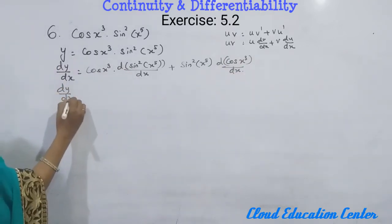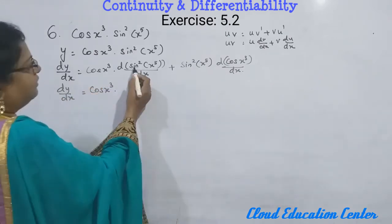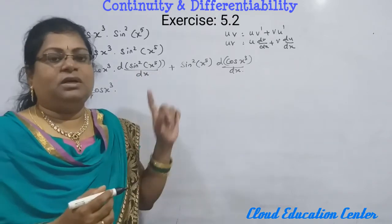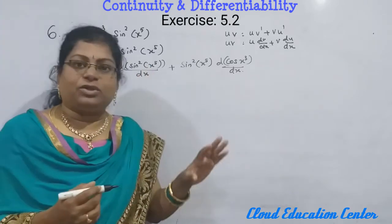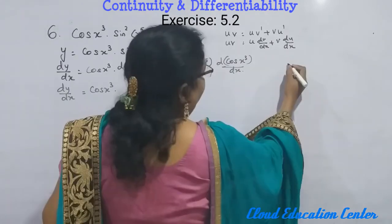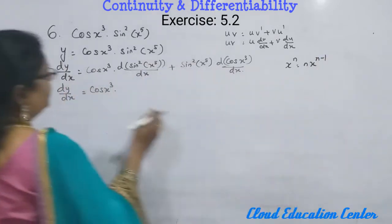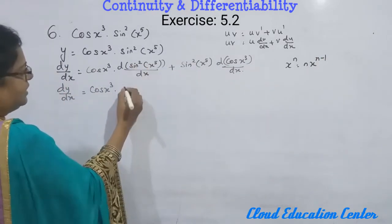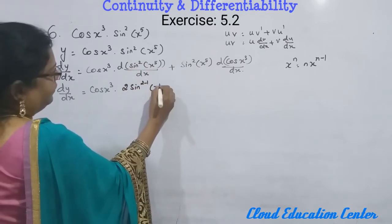dy/dx equals cos(x³) — now we have to differentiate sin²(x⁵). Here we apply the chain rule. In the chain rule, first priority goes to the power. So the square takes first priority. Using x^n = n·x^(n−1), the 2 comes to the front: 2·sin^(2−1)(x⁵), keeping x⁵ inside.